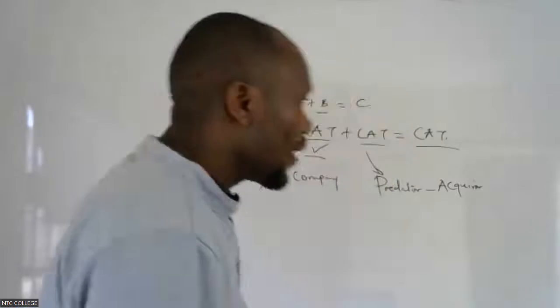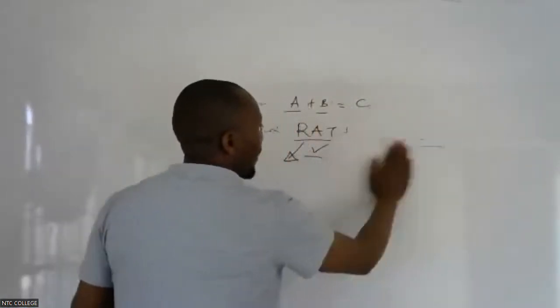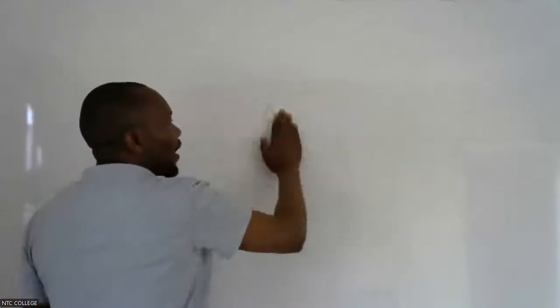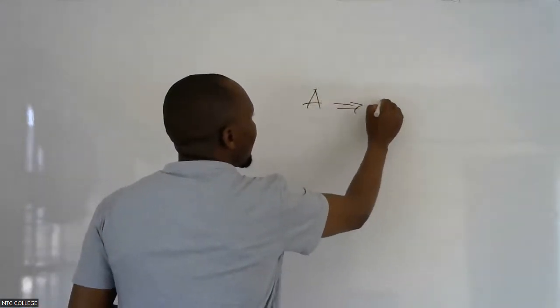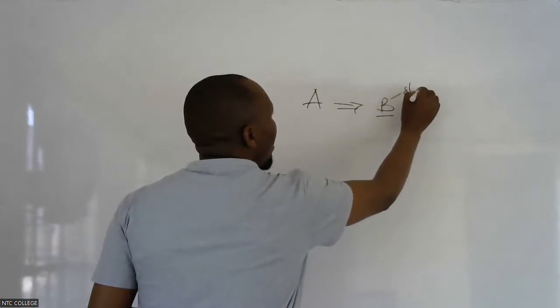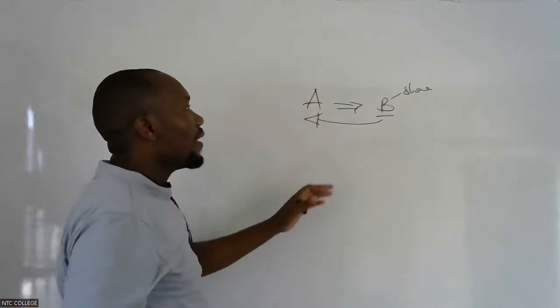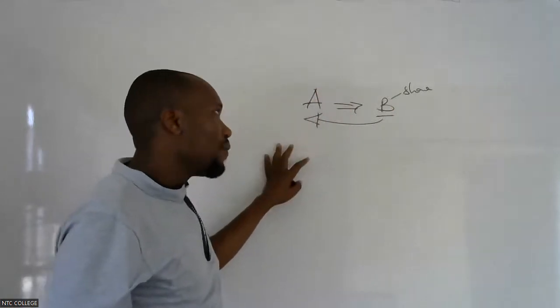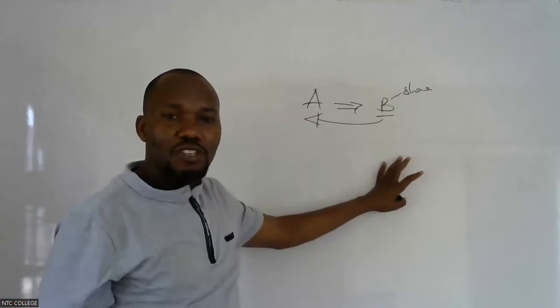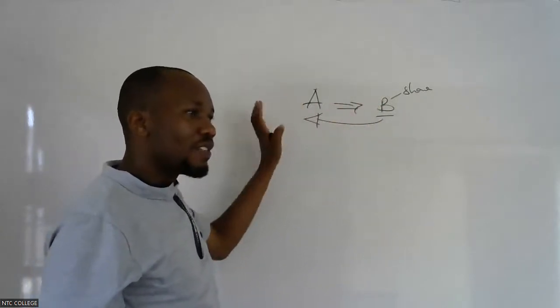Now let's say a company has taken over another one. The company being acquired has directors or shareholders who have injected money into that business. These shareholders are going to be stranded, and even employees are there. Those shareholders have their shares in that company. So if A is acquiring B, the shareholders in B will have to buy shares from A — they are going to be given an offer to buy A's shares so that they become shareholders in A, because B is going to die and will no longer be there.